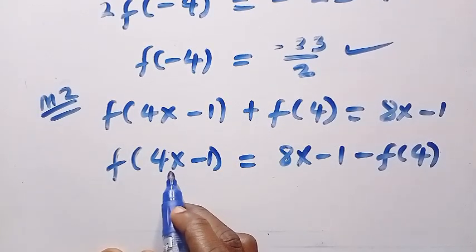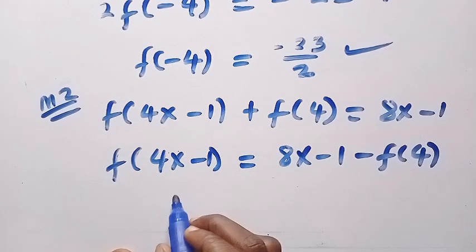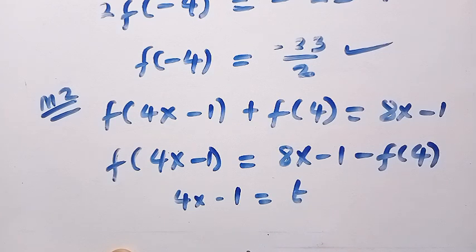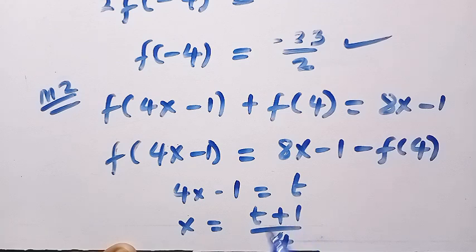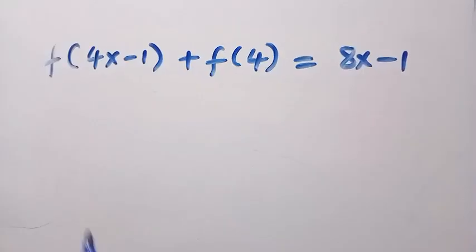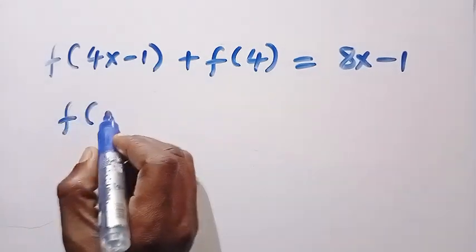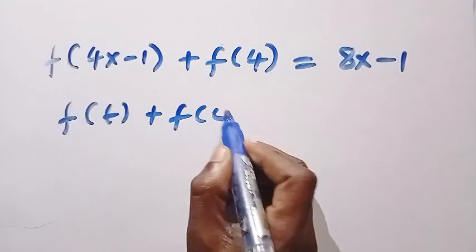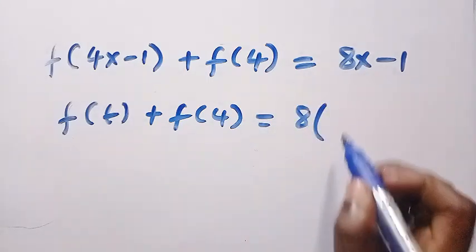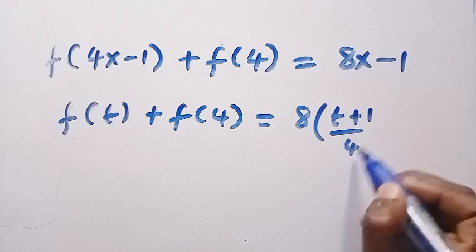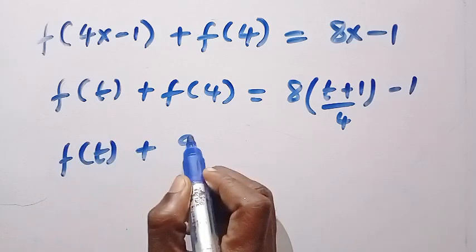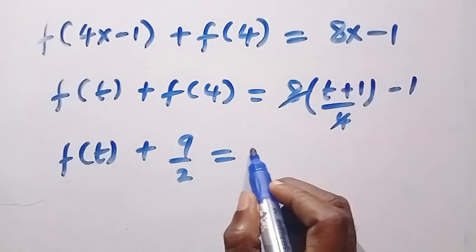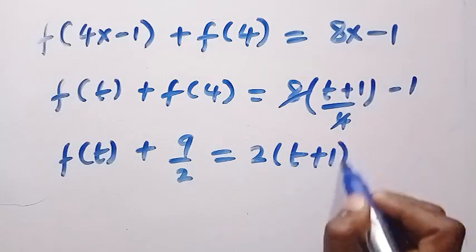Making x the subject by replacing the argument with t: 4x minus 1 equals t gives x equals t plus 1 divided by 4. Everywhere we see x, we substitute t plus 1 over 4. Changing 4x minus 1 to t, we have f of t plus f of 4 equals 8 times bracket t plus 1 over 4 minus 1. We know f of 4 equals 9 over 2, and 8 over 4 equals 2, so this becomes 2 times bracket t plus 1 minus 1.